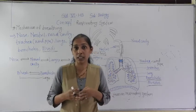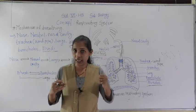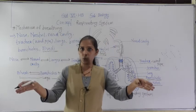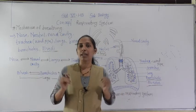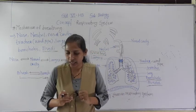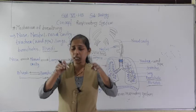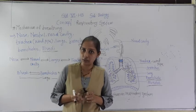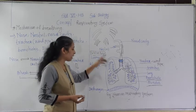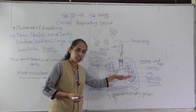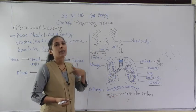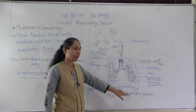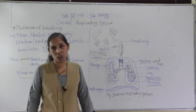During breathing, the ribs perform certain movements. When we inhale, the ribs move upward and outward. When we exhale, the ribs move downward and inward. When we inhale, the diaphragm moves down; when we exhale, the diaphragm returns to its normal position.